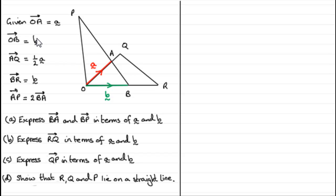What we've got though is we're told that OA is the vector a, OB is the vector b, and AQ is a half a, BR is also the vector b, and AP is twice BA.